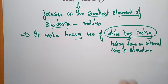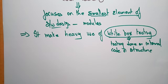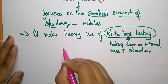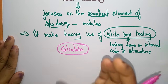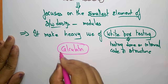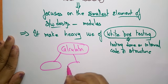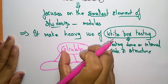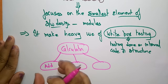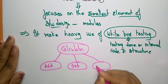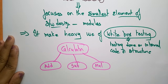Unit testing covers the smallest testable parts of an application, called units, and these are tested independently. For example, take a calculator as a product — this complete system is divided into sub-modules. Rather than working on the complete module, I divide it into small units and check whether addition, subtraction, and multiplication are working properly. Testing done on these individual modules is called unit testing.